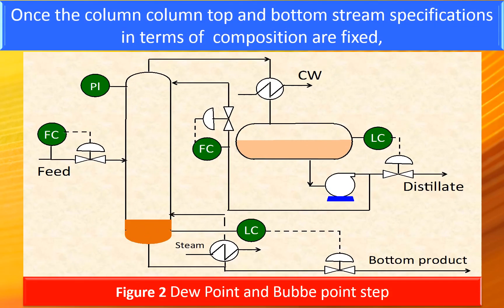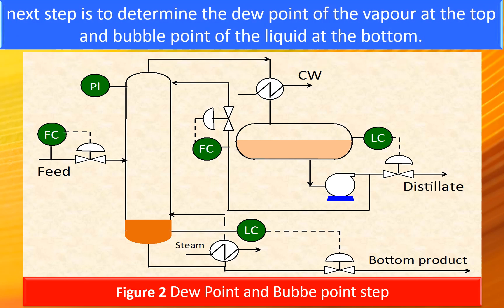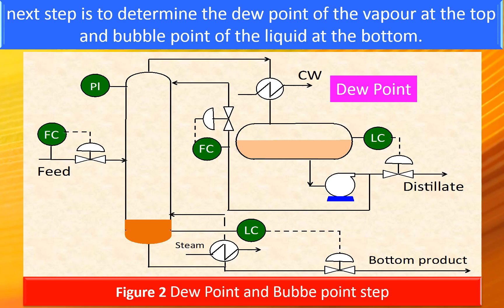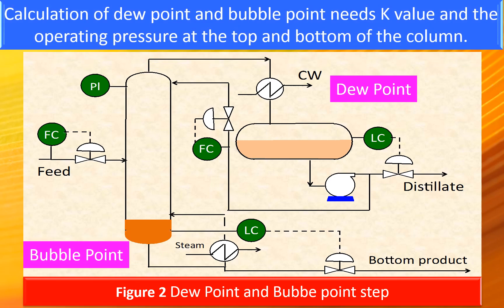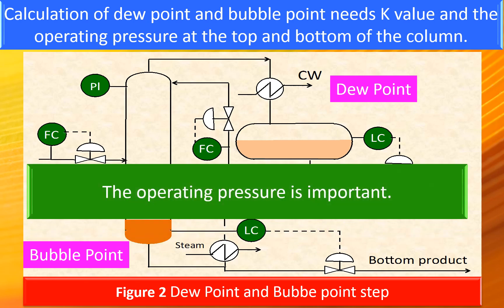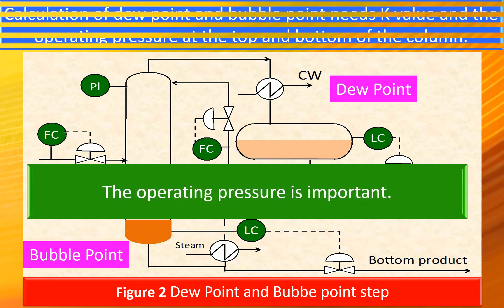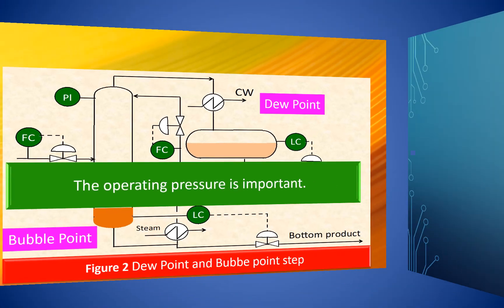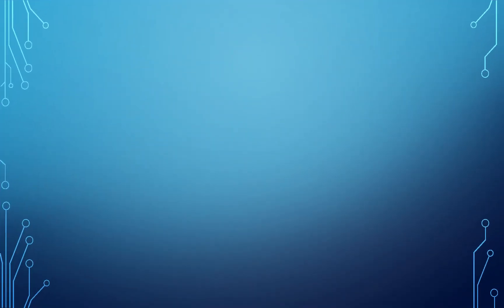Once the column top and bottom stream specifications in terms of compositions are fixed, the next step is to determine the dew point of the vapor at the top and bubble point of the liquid at the bottom. Calculation of dew point and bubble point needs the k-value and the operating pressure at the top and bottom of the column.